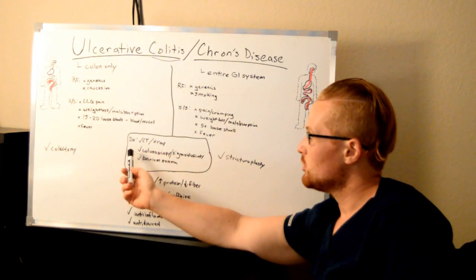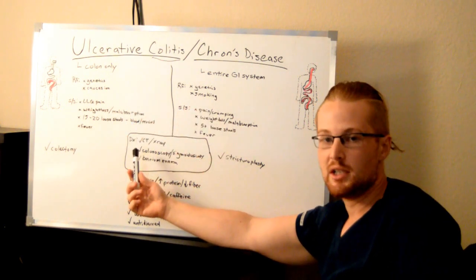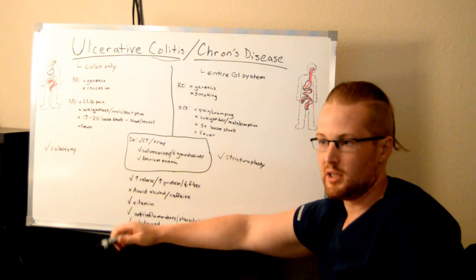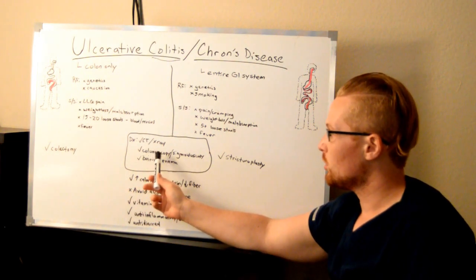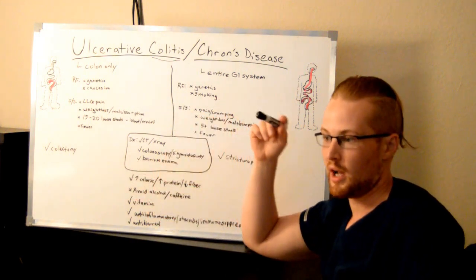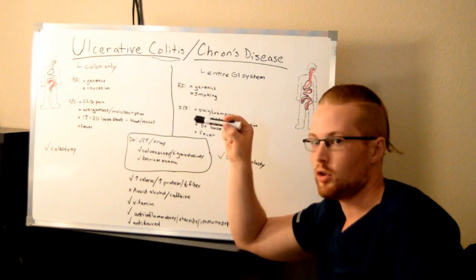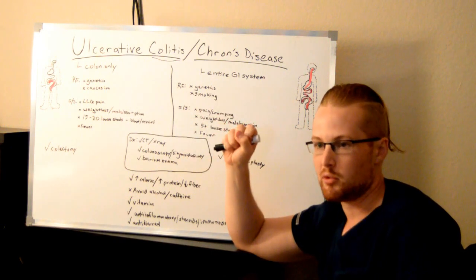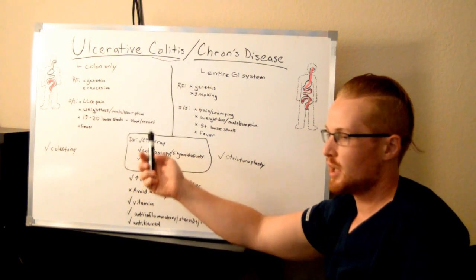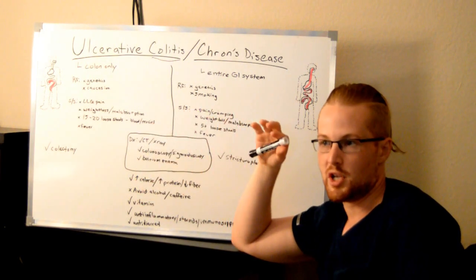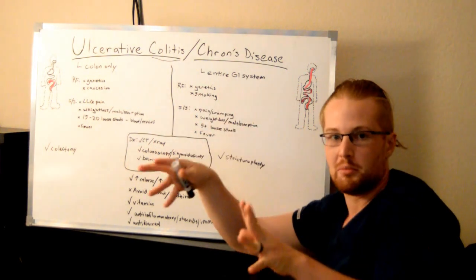As far as diagnosis, the process is similar for both. You look at their symptoms, and then the doctor could do a CT or an x-ray where they'll see something is wrong with the GI system. After that, they could do a colonoscopy or sigmoidoscopy — taking a scope up through the anus to look at what it actually looks like and maybe take some samples to make sure it's not cancer. Or they could do a barium enema, where they inject radioactive dye and then do an x-ray to get really good pictures of the bowels.